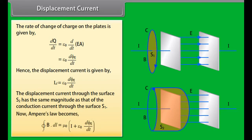The displacement current through the surface S2 has the same magnitude as that of the conduction current through the surface S1. Now Ampere's law becomes closed integral of B dot DL is equal to mu not multiplied by I plus epsilon not D phi E by DT.